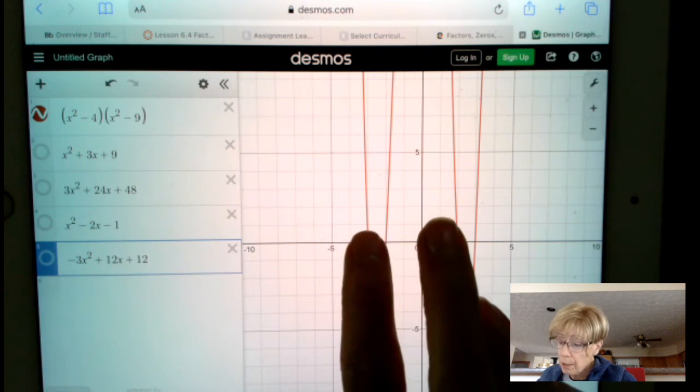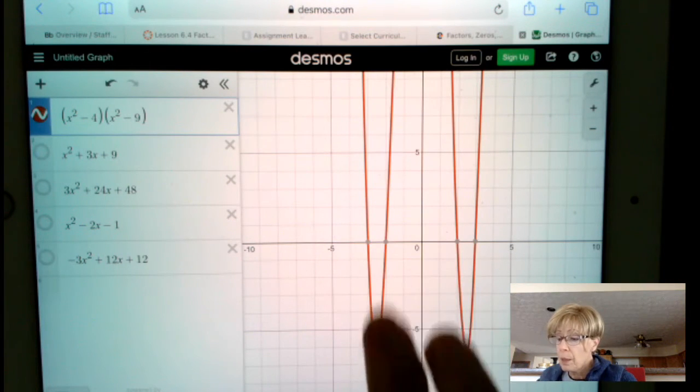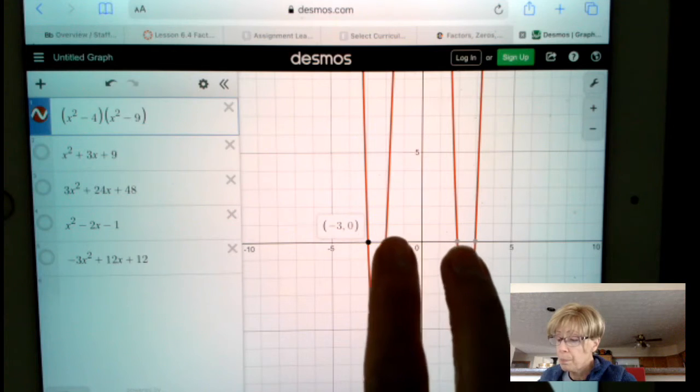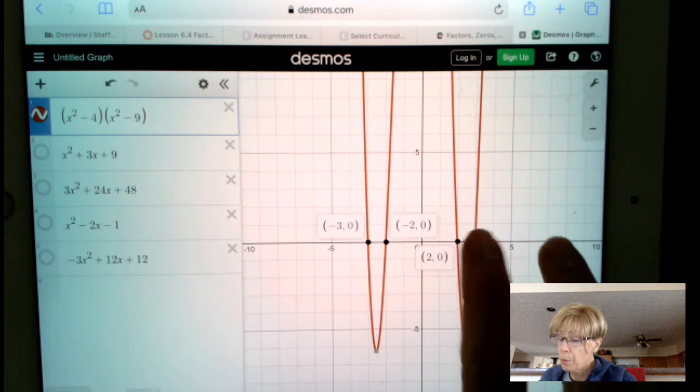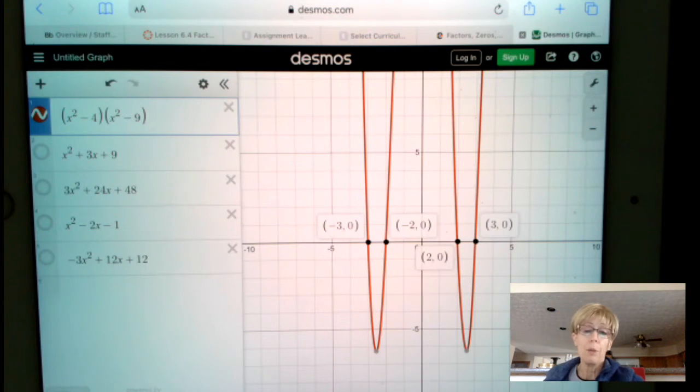X squared minus 4, it has a zero here at negative 3, negative 2, positive 2, and positive 3. X squared minus 4 could be factored more into x minus 2 times x plus 2. X squared minus 9 could be factored more into x minus 3 times x plus 3.